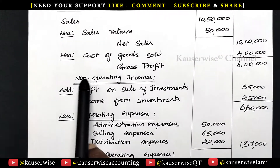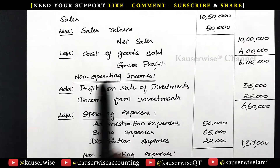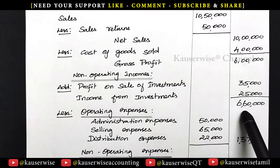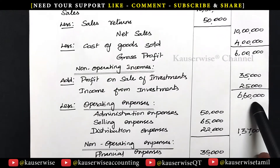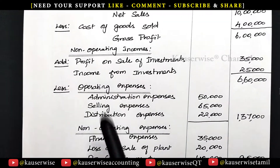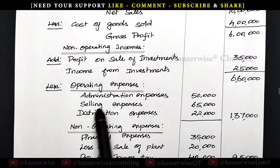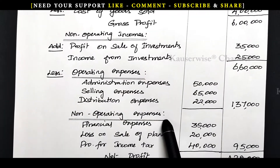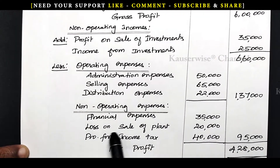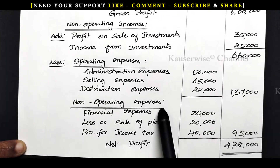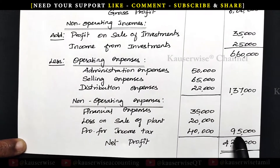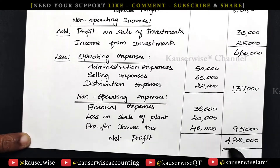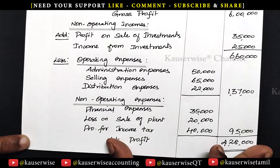There is also non-operating income: profit on sale of investment and income from investment. After adding these, the total amount is 6 lakh 60,000. Then operating and non-operating expenses need to be subtracted. Operating expenses: administrative expense, selling expense, distribution expense — total 1 lakh 37,000. Non-operating expenses: financial expenses, loss on sale of plant, and provision for income tax — totaling 95,000. After subtracting both, the residual amount is 4 lakh 28,000, which is the net profit as per the income statement.